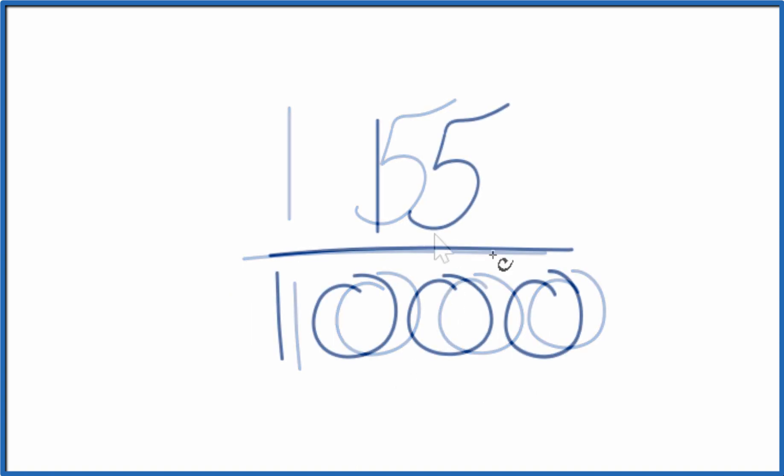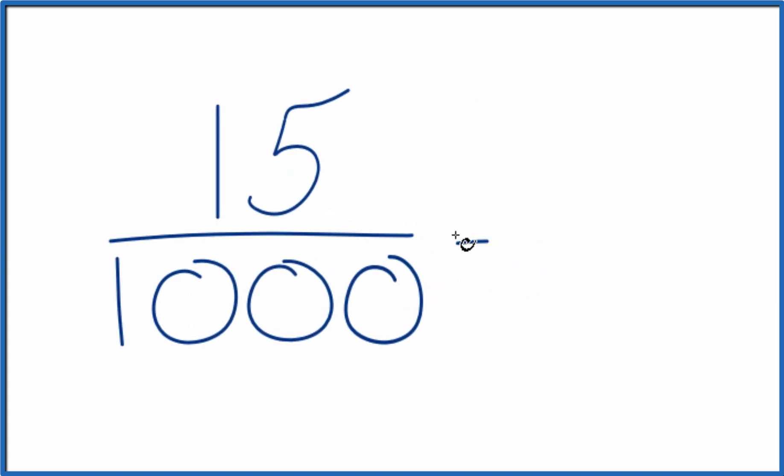So 1.5% is the fraction 15 over 1,000. But we can simplify this because 5 goes into 15 three times, and 5 goes into 100 four times, so it would go into 1,000 forty times. So when we simplify the fraction, we end up with 3 40ths. These are equivalent. This is just in simplest terms. And this is our fraction for 1.5%.